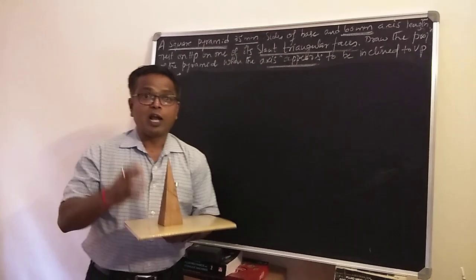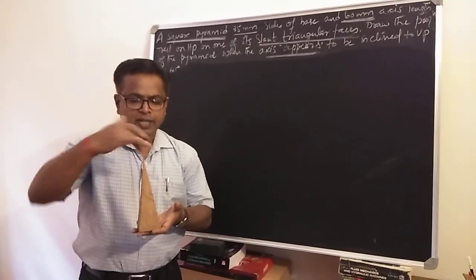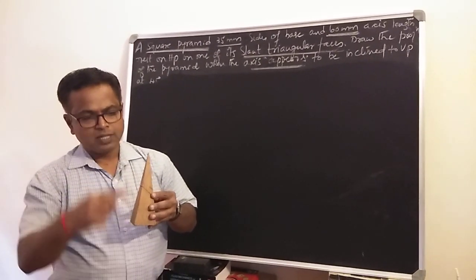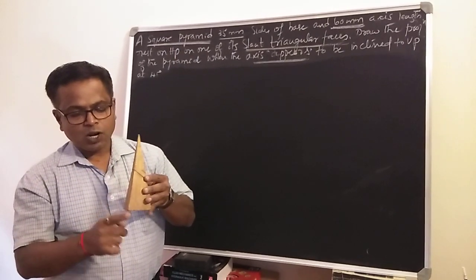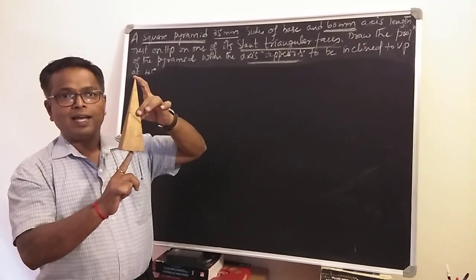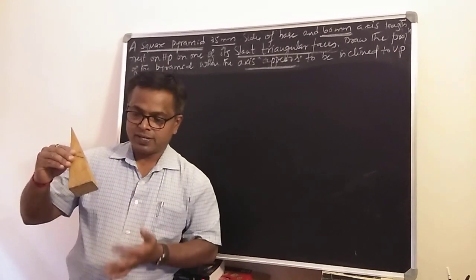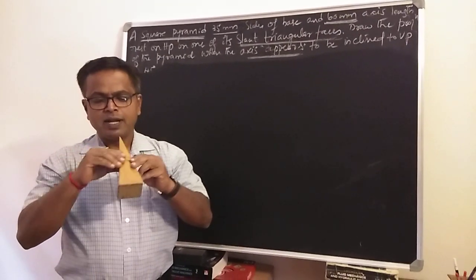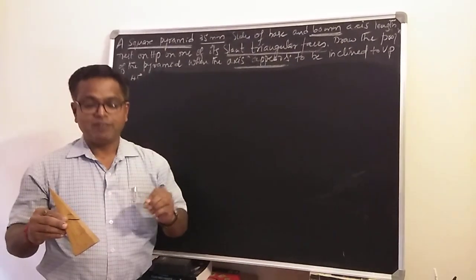A pyramid is a solid or a polyhedron. It consists of a base and slant triangular faces, where all the triangular slant faces meet at a junction called the apex or vertex. The line connecting the base corner and the apex is called the slant edge, and the line connecting the apex to the center of the base is called the axis line. Pyramids are named according to the shape of the base: square pyramid, triangular pyramid, pentagonal pyramid, and so on.